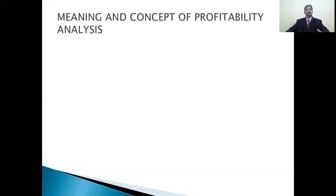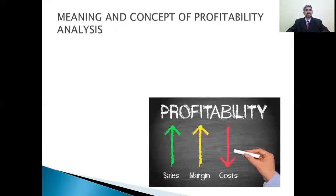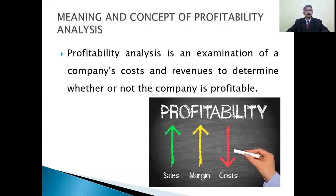The main focus of profitability study is all three variables. Customer profitability analysis (CPA) is a method of calculating revenue from customers after subtracting all expenditures. Customer product profitability analysis adds the calculation of product and customer profitability. Profitability depends on the sales cost and the difference between them. Profitability analysis is an examination of a company's cost and revenue to determine whether or not the company is profitable.